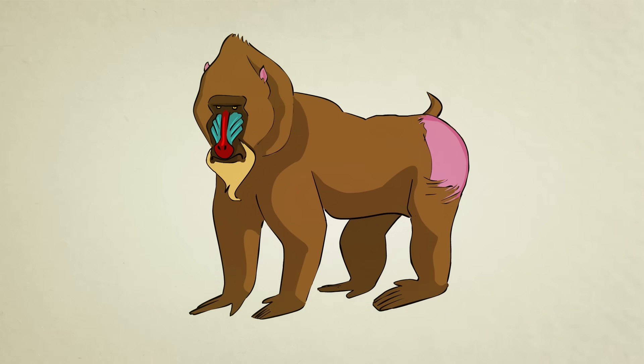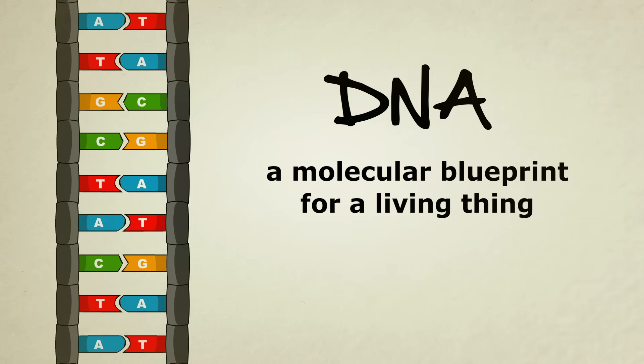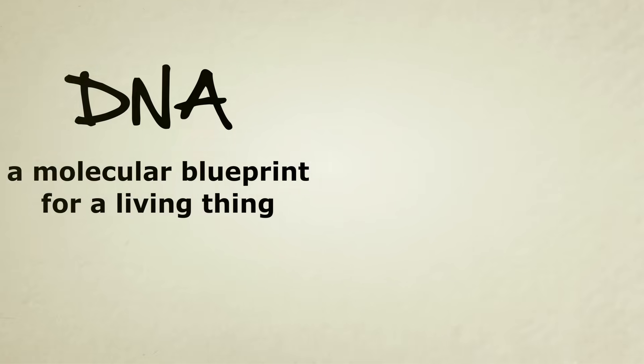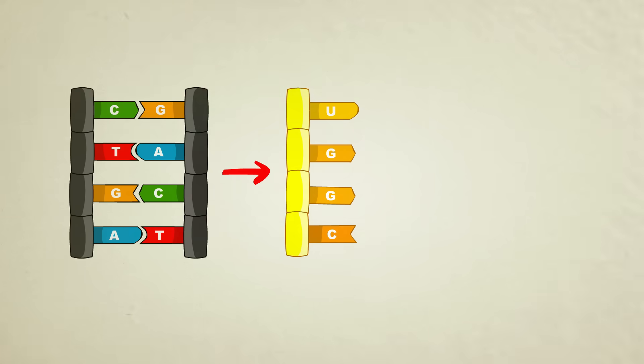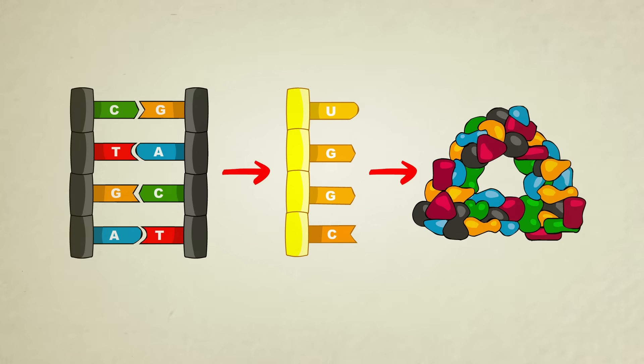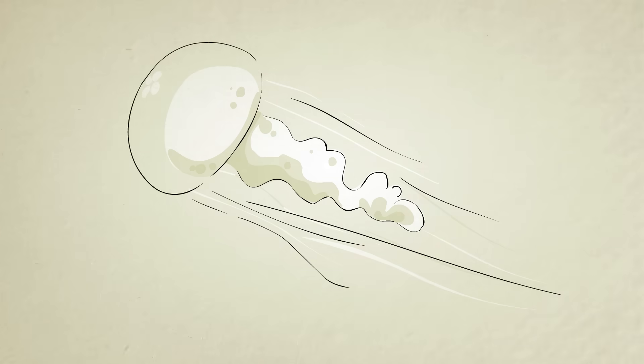So to answer the original question, what is DNA? DNA is a molecular blueprint for a living thing. How does it work? DNA creates RNA, RNA creates protein, proteins go on to form life.